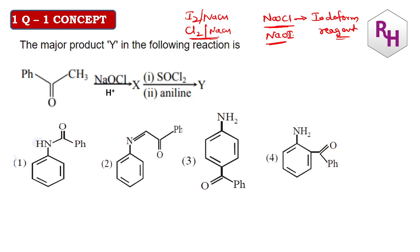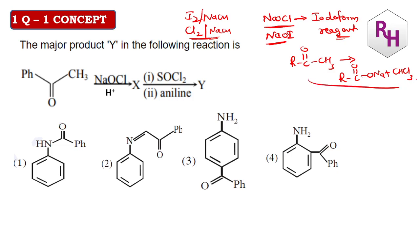One important point: when iodoform reagent is used, if the compound has the structure R-C(=O)-CH3, this will get converted into R-C(=O)-ONa plus CHCl3. If it is iodine, you get CHI3. That is the iodoform reaction.